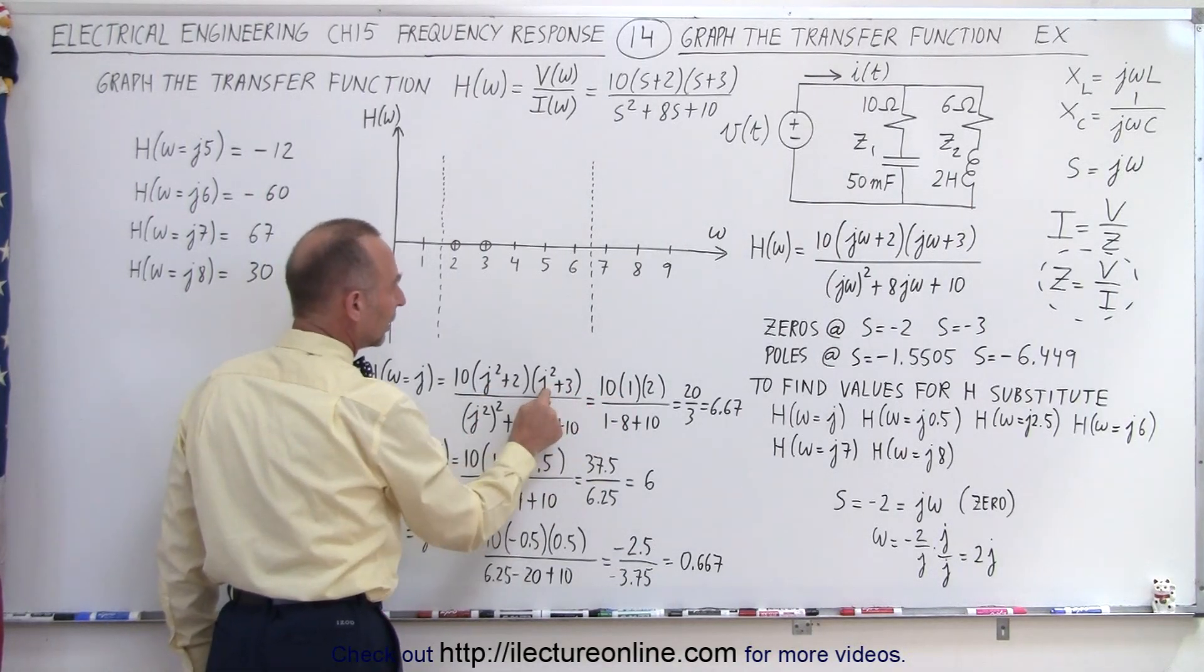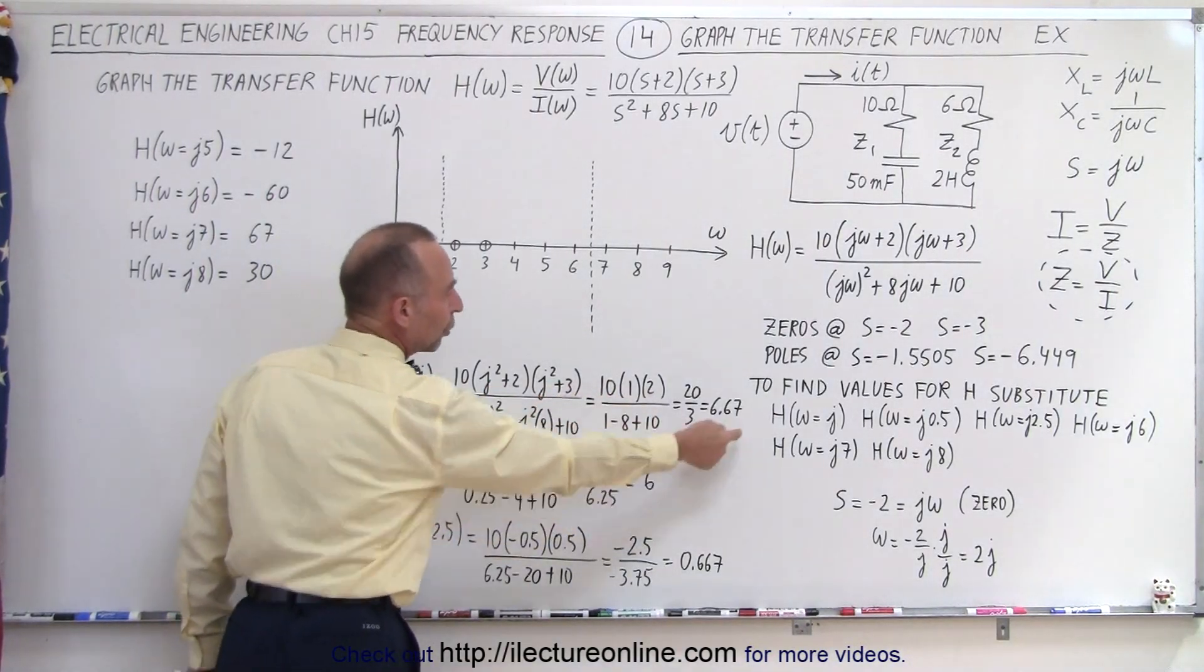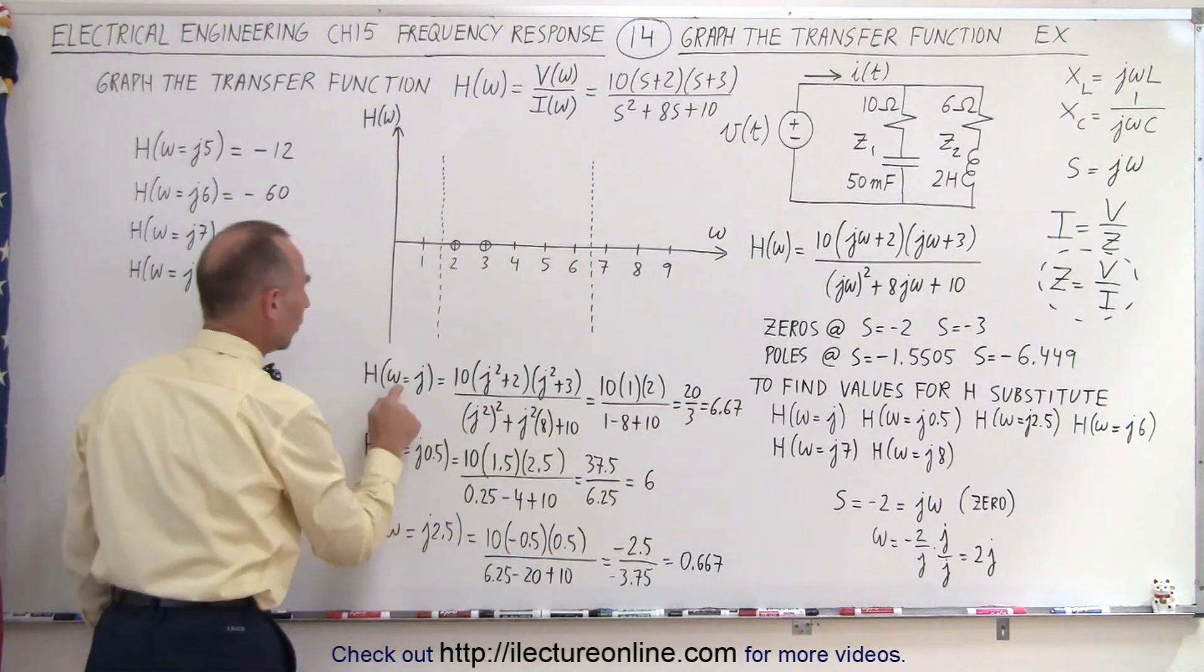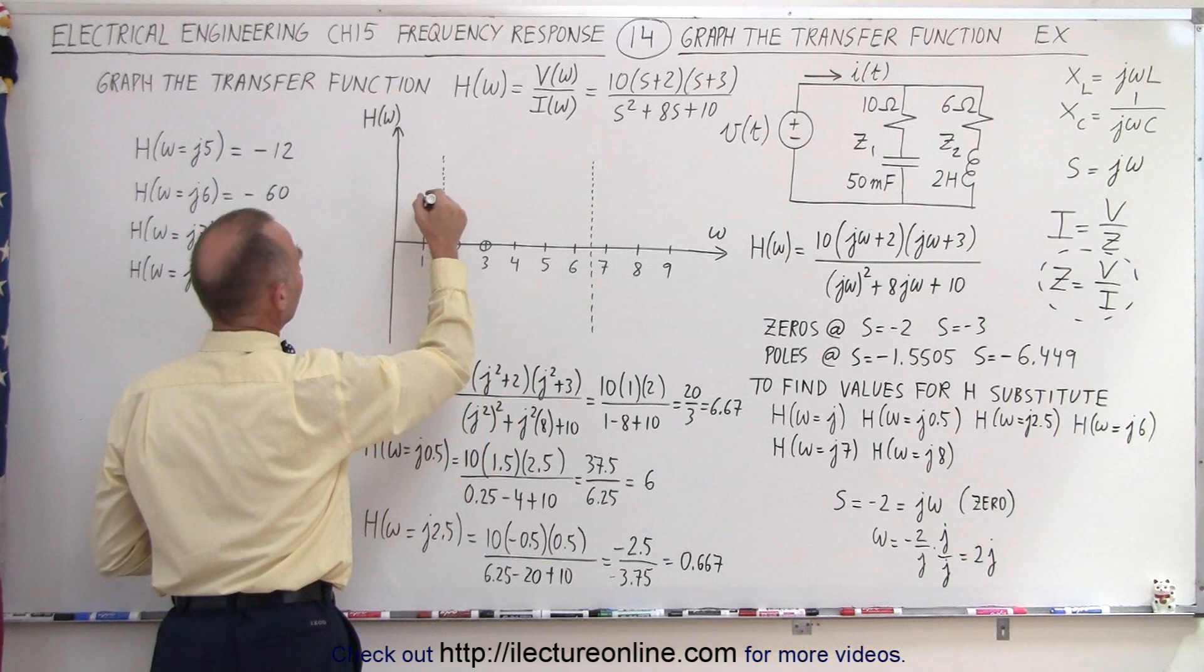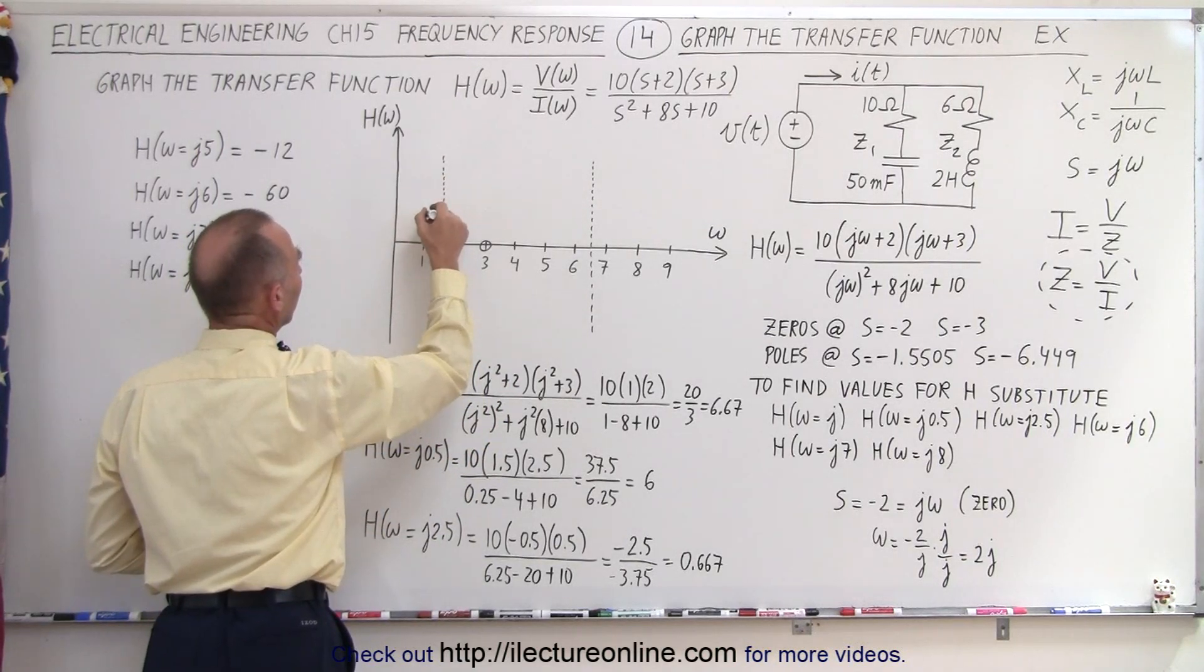Negative 1 plus 2 is 1, negative 1 plus 3 is 2, and so forth. We get 6.67 when omega equals j, or 1 right here. So 6.67, let's put it right about there.